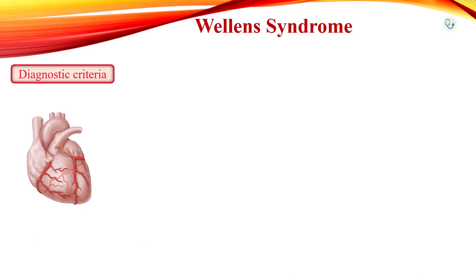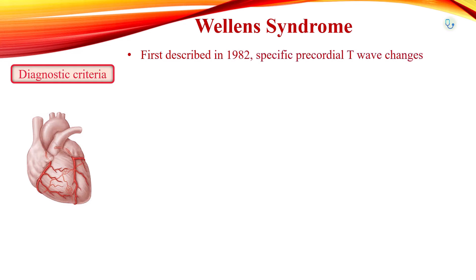Wellens syndrome was first described in the early 1980s by Dr. Henrik Wellens and his colleagues. They identified a subset of patients with unstable angina who had specific precordial T-wave changes, and subsequently developed a large anterior wall myocardial infarction. The EKG changes are associated with critical stenosis of the proximal left anterior descending coronary artery.